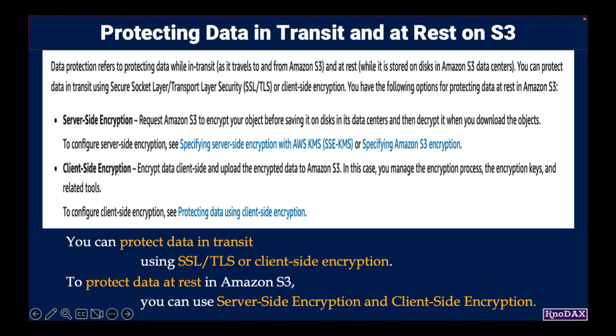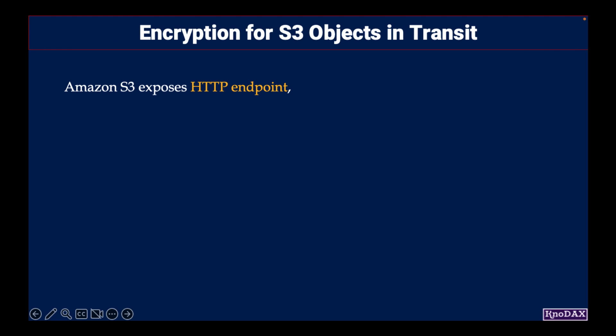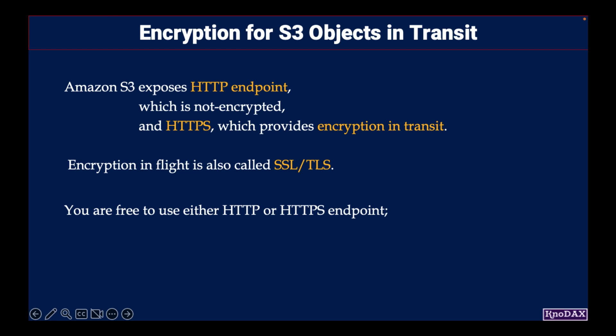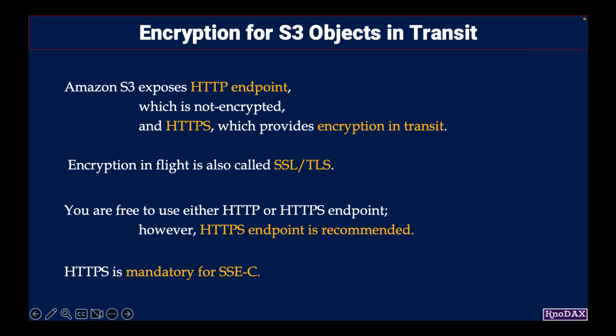Now let's talk about S3 handling of encryption in transit. Amazon S3 exposes an HTTP endpoint, which is not encrypted, and HTTPS, which provides encryption in transit. Encryption in flight is also called SSL. You are free to use either HTTP or HTTPS endpoint; however, HTTPS is recommended. HTTPS is mandatory for server-side encryption by customers who use their own data keys and management of keys outside of AWS.